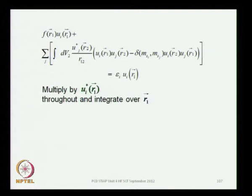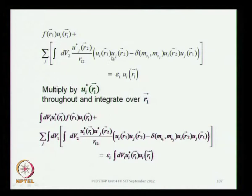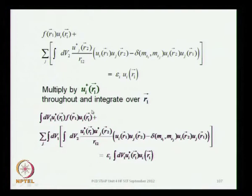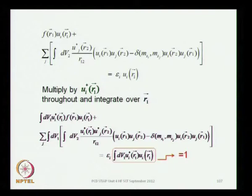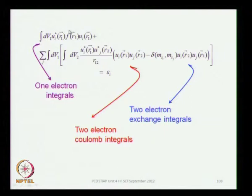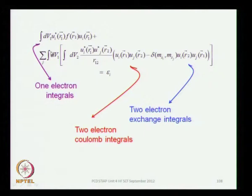We multiply the Hartree-Fock equation by the complex conjugate u_i*(r_1) and integrate over r_1. Every term is treated by the same prescription. The right-hand side gives the normalization integral, which equals unity. The first terms that appear are the one-electron integrals, and then the two-electron integrals arise because there is a double integration over dv_1 and dv_2 — dv_2 was already present, and now we have included integration over dv_1. From these double integrations we obtain the Coulomb and exchange integrals.